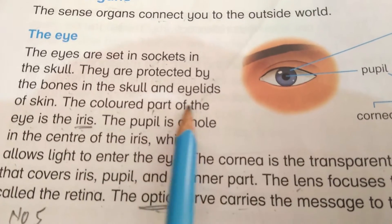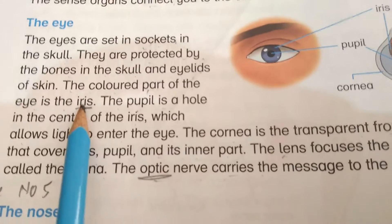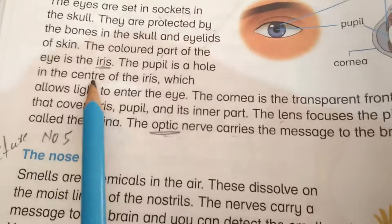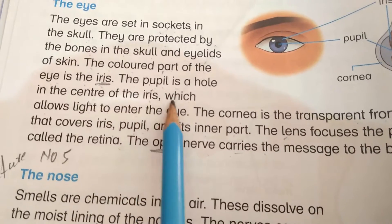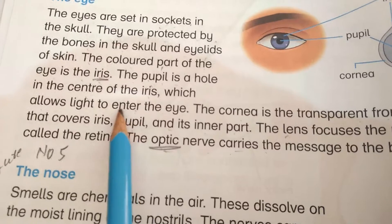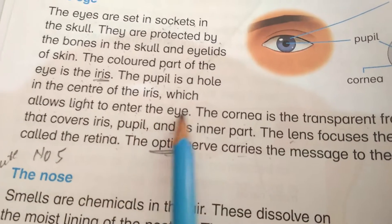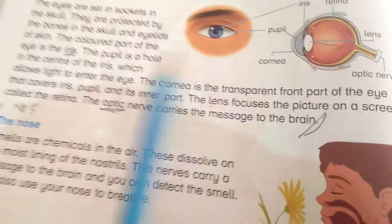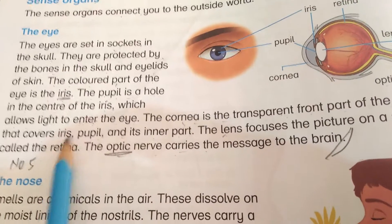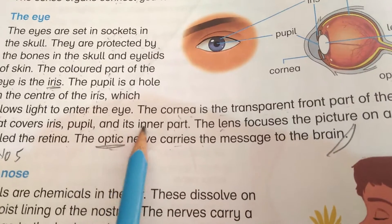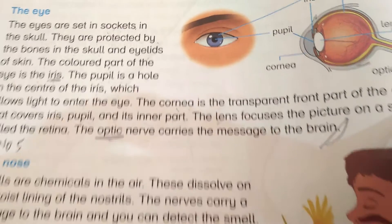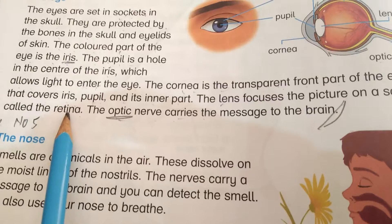The eyes are set in sockets in the skull. They are protected by the bones of the skull and the eyelids. The colored part of the eye is the iris. The pupil is a hole in the center of the iris which allows light to enter the eye. The cornea is the transparent front part of the eye that covers the pupil and its inner parts. The lens focuses the picture on a screen called the retina.